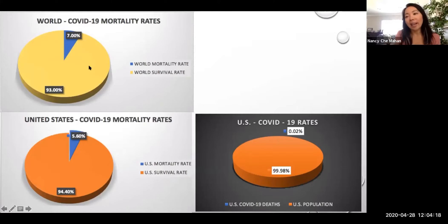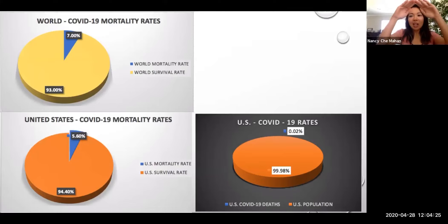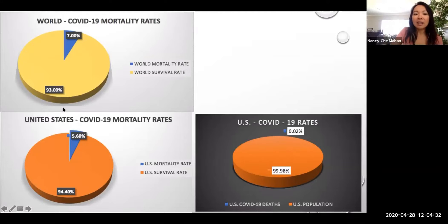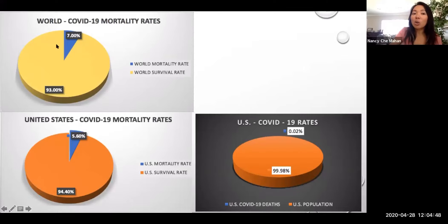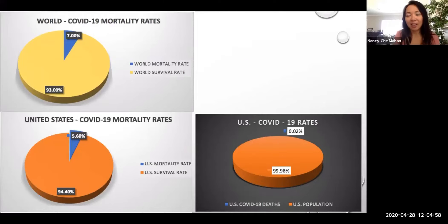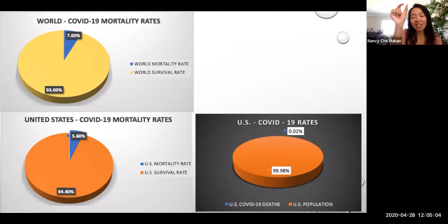The reason why I like visualizing it in a pie chart rather than just giving out numbers is because you can see the whole. The sliver is the 7%, the sliver is the 5.6% — what I would call a sliver of the truth. When we only look at or focus on 7% or 5.6%, we really forget to look at the whole, and the whole says that 93% has had a survival rate in the world, and 94.4% have had a survival rate in the United States out of those who have gotten the coronavirus. I love graphs because they give you the whole picture and not just a sliver of it.